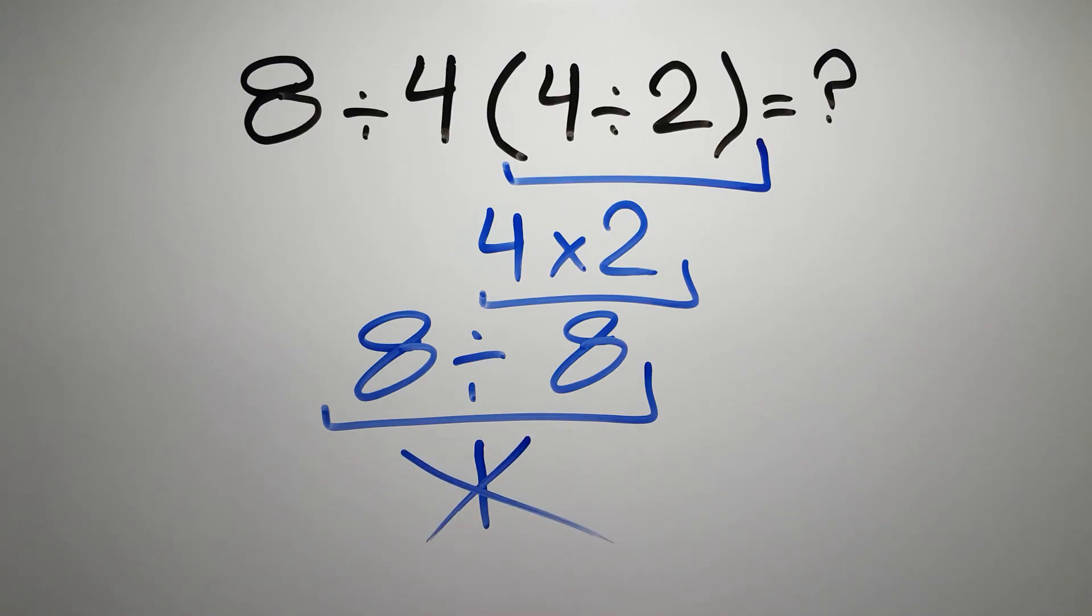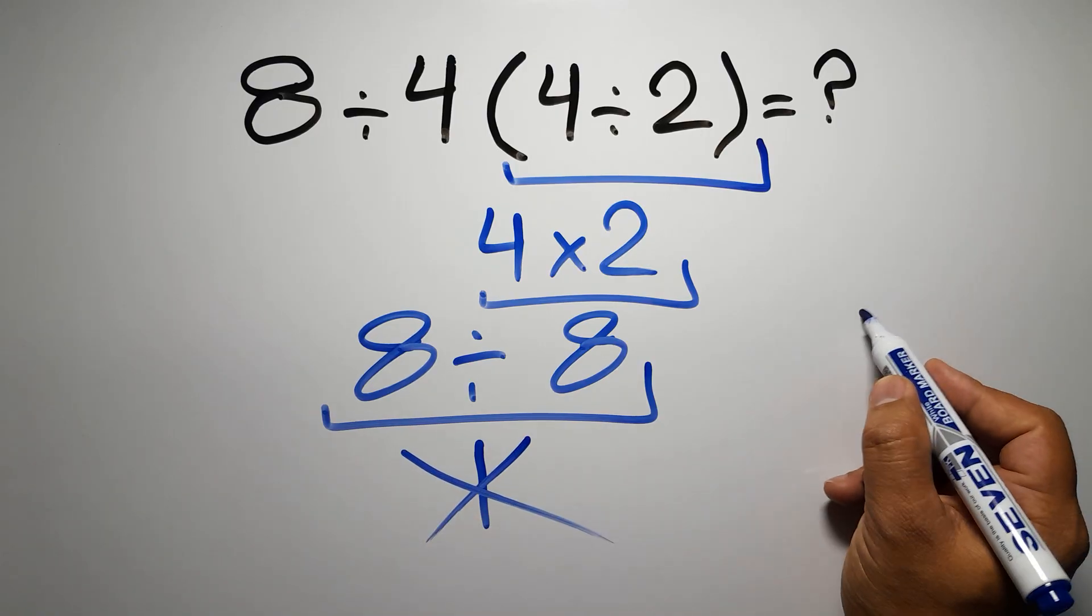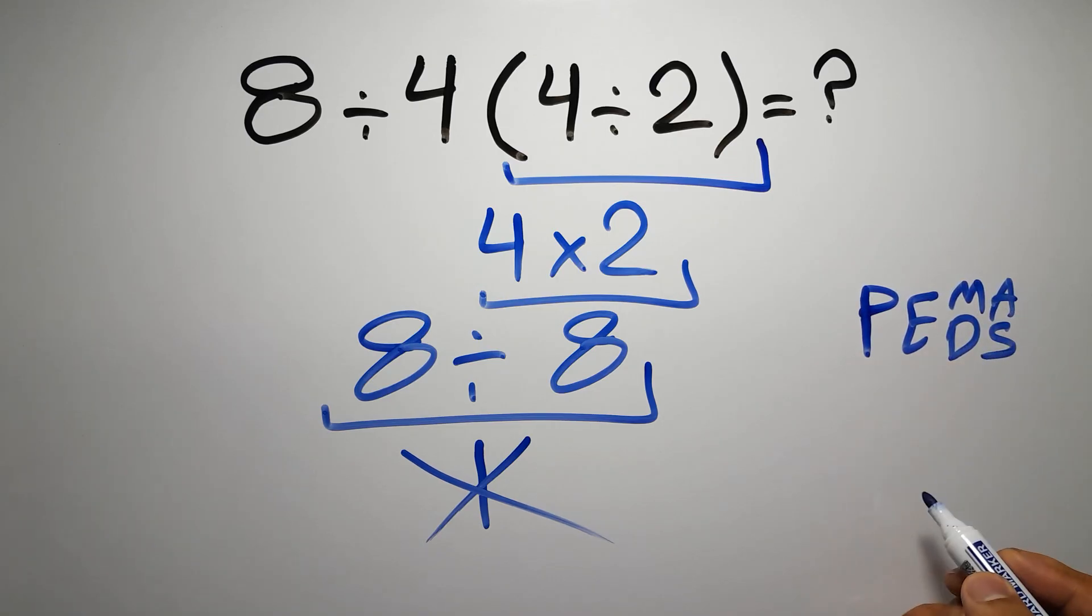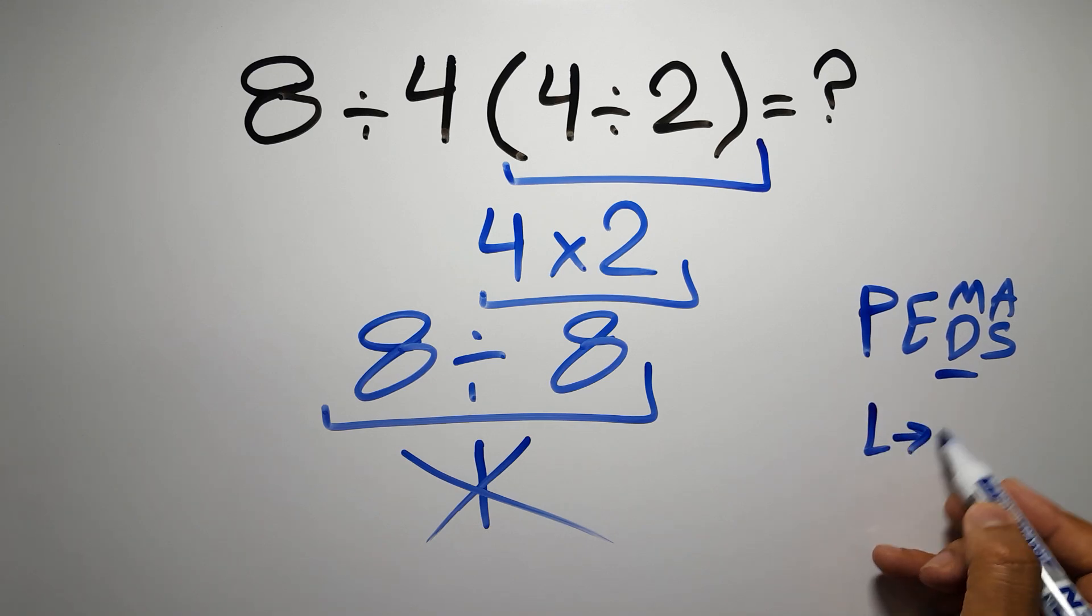because according to the order of operations, first we have to do parentheses, then exponents, then multiplication or division, and finally addition or subtraction. Remember that multiplication and division have equal priority, and we have to work from left to right, and the same applies to addition and subtraction.